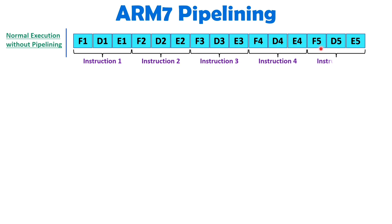I am giving you an example of 5 instructions. How many machine cycles are required? 5 instructions into 3 stages means, in total, 15 machine cycles are there without pipelining.